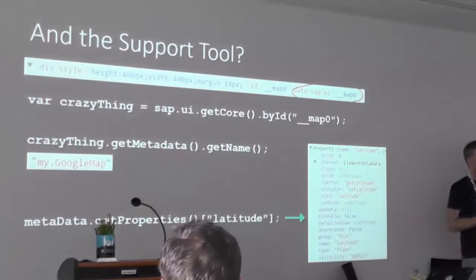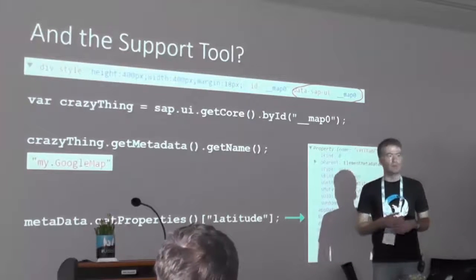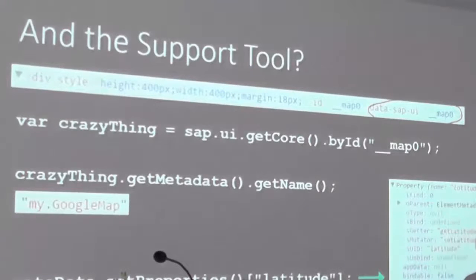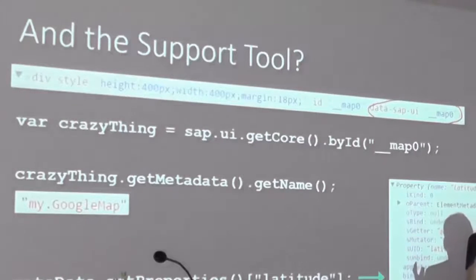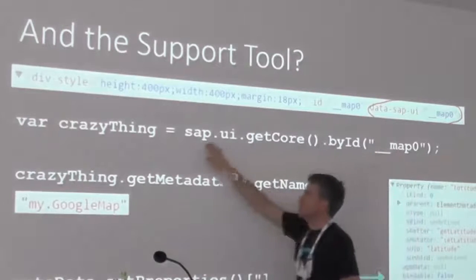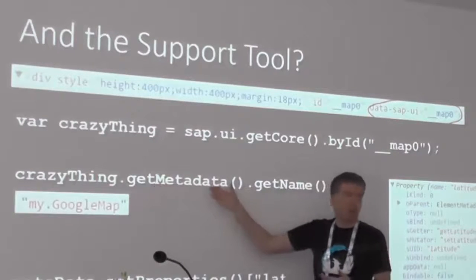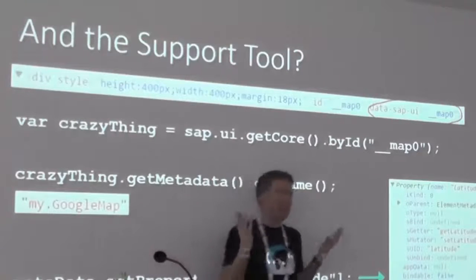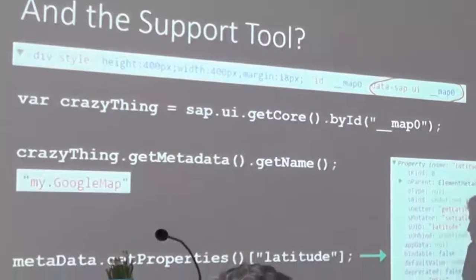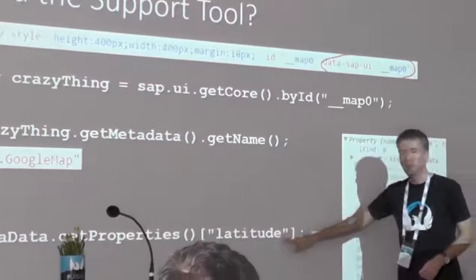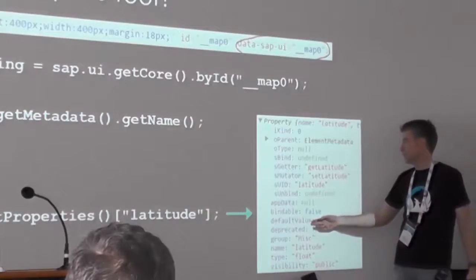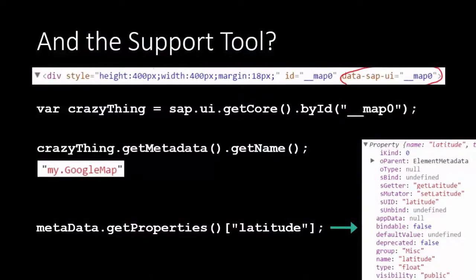How does the support tool recognize the Google Map and display its properties? That's because we have the management information — the ID of the map — written to the HTML via writeControlData. UI5 can then find the connection between the HTML and the JavaScript object, get the control instance, and inspect it. You can call getMetadata on any control and get a lot of information: the class name, properties, and so on. With getProperties, you get a map of all properties — for example latitude — with all kinds of meta-information like type, default value, and so on. That's how UI5 or anyone can inspect controls, even custom controls.